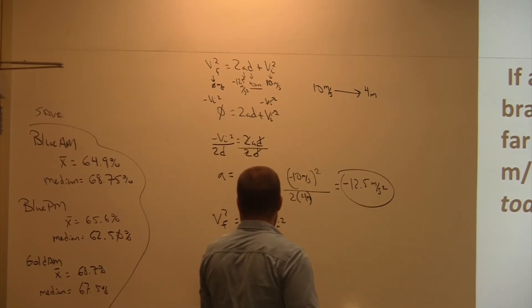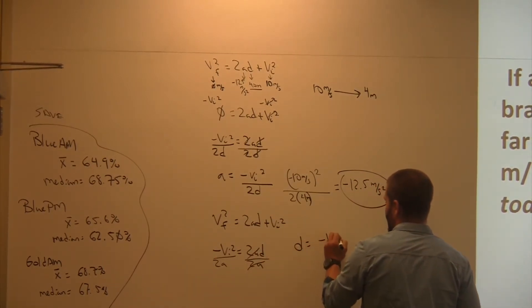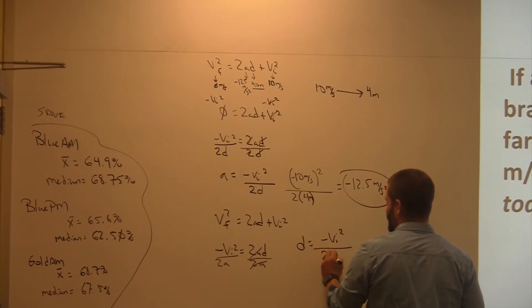So how do I do that? Divide by 2A on one side, divide by 2A on the other side. Cancel, cancel, cancel, cancel. That's going to leave me with D equals negative VI squared all over 2A.